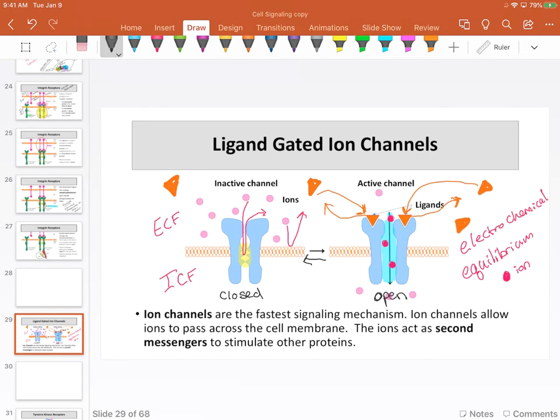And to some degree this is governed by laws of probability. It has to do with the concentration of the ligand. Obviously, the more ligand we have present, the probability of these channels being in their open state is much higher. Now, ion channels generate very rapid signals. They're the fastest of all the receptors in terms of generating a response within the cell. And part of the reason is because these ions that enter into the cell, those ions are in fact second messengers.